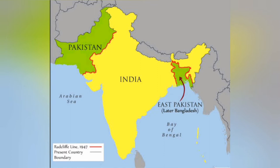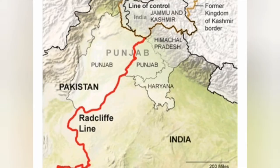The independence of India in 1947 was accompanied by the creation of two independent nations along religious lines, namely the Republic of India and the Republic of Pakistan. Muslim majority regions went to Pakistan and Hindu majority regions went to India. On 17th August 1947, the Radcliffe Line was finalized and recognized as an international border between India and Pakistan.